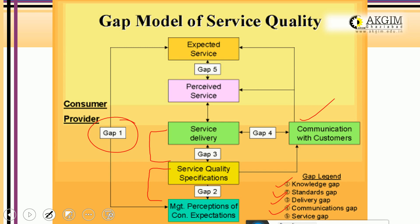Gap 4 is the Promise Gap or Communication Gap. Whatever the company communicated through advertisements, promises made by sales personnel, or other means — if that doesn't match what was actually delivered, there is a Communication Gap. This is Gap 4.